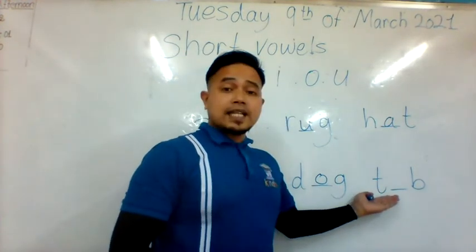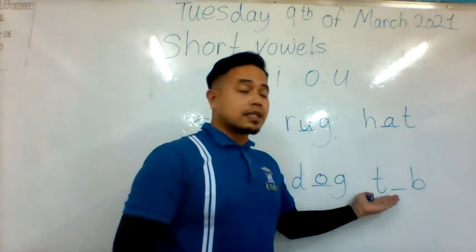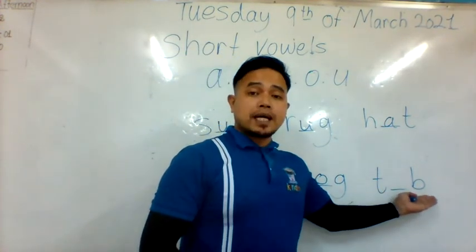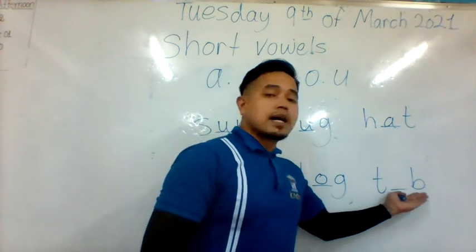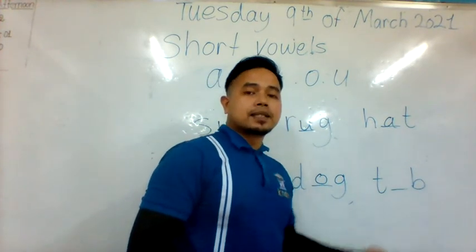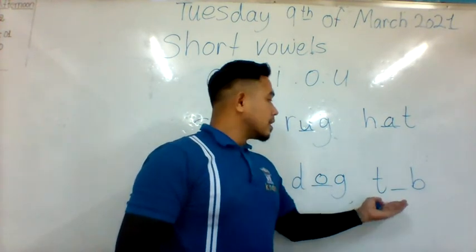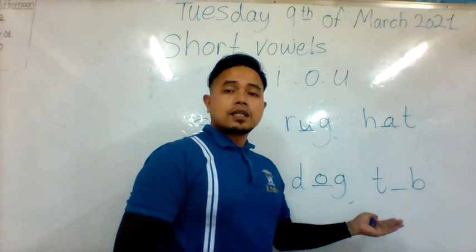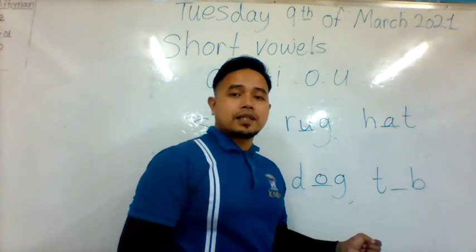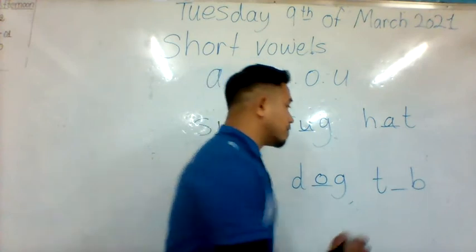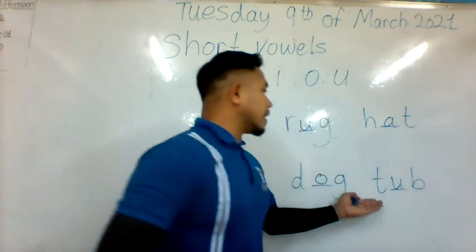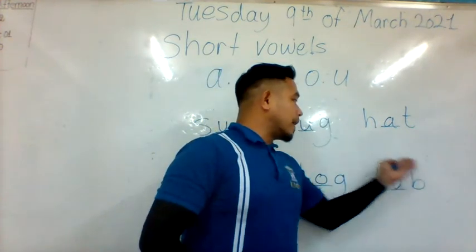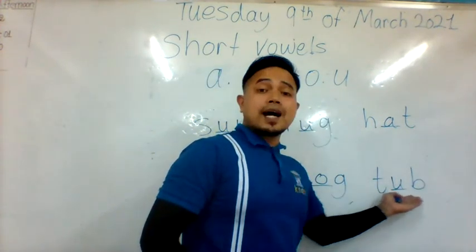The letter T — 'tuh'. The letter B — 'buh'. Tuh, uh, buh — TUB. So what is the 'uh' sound, everyone? It is the letter U. Very good. So the letter U makes the full complete word — TUB.